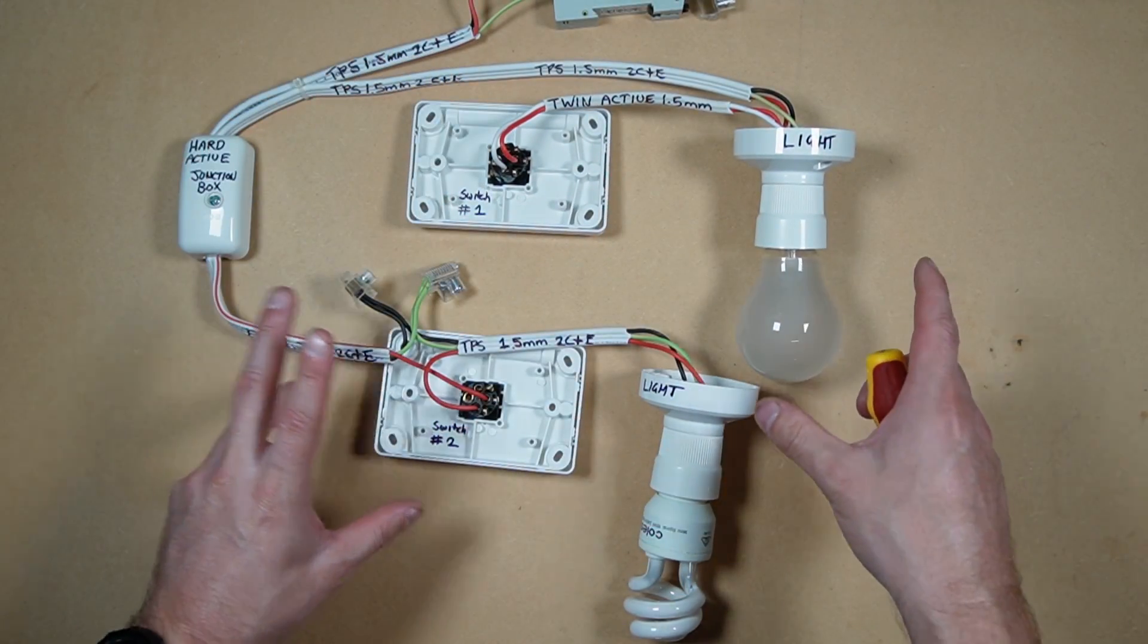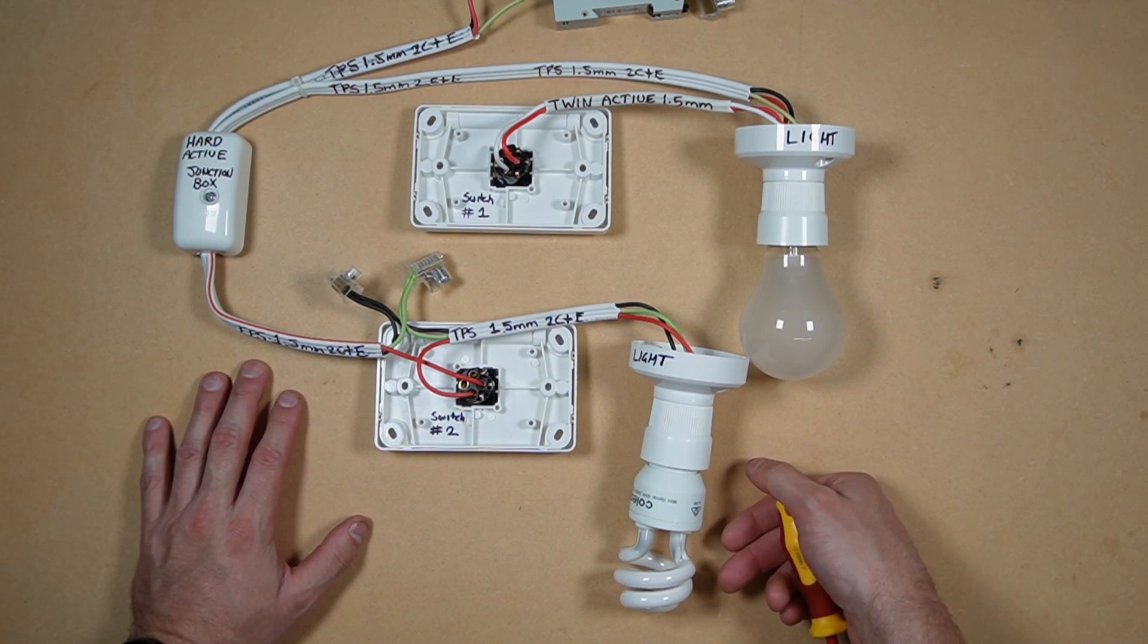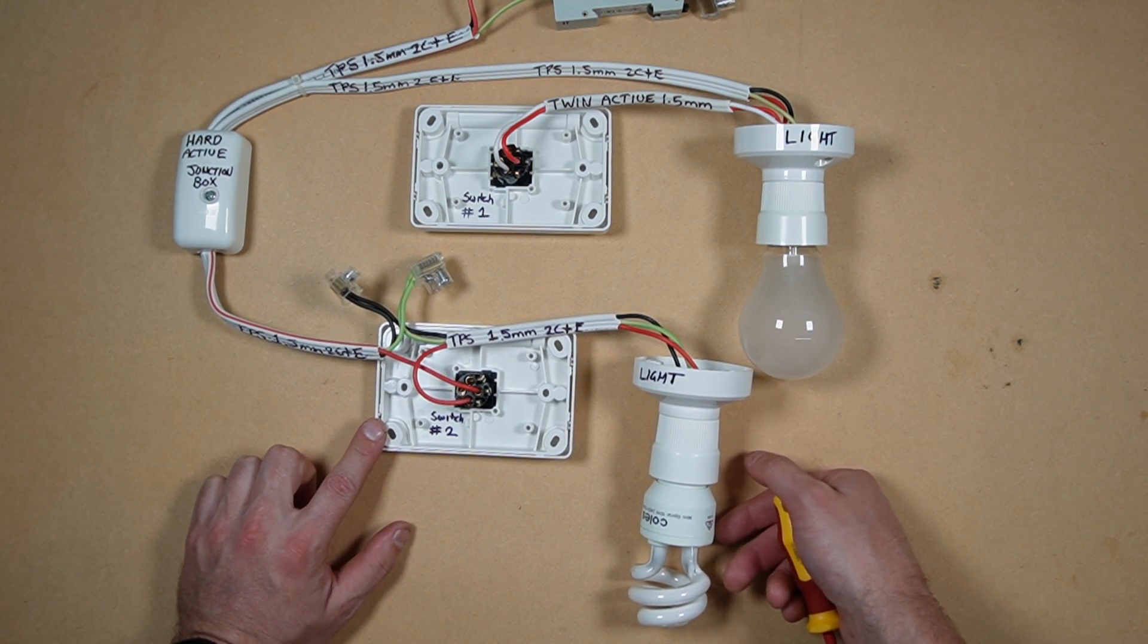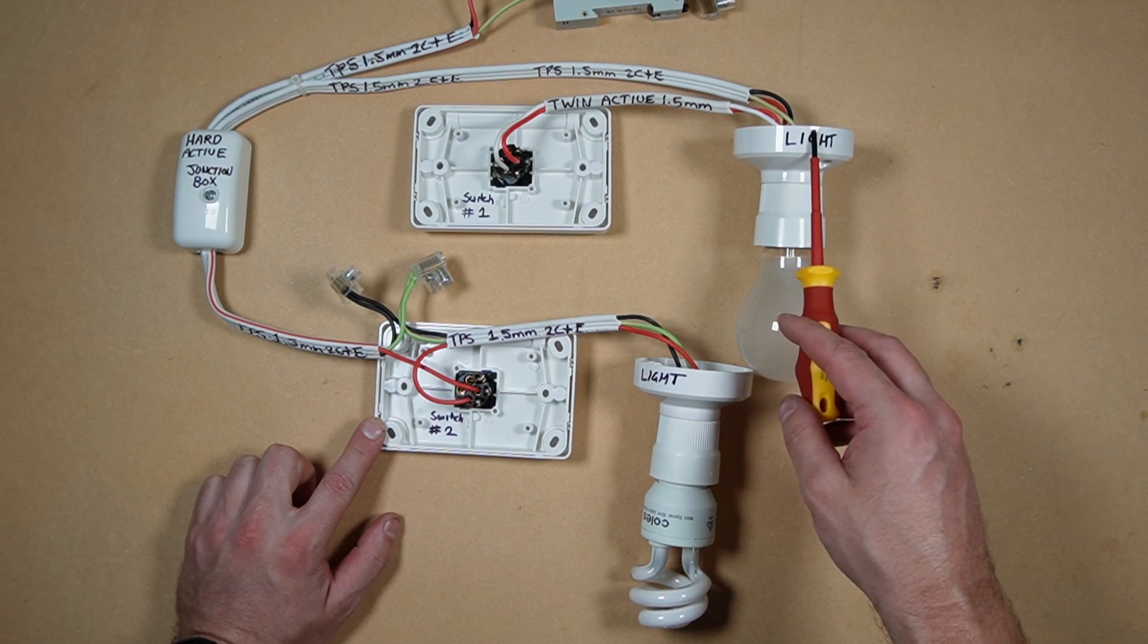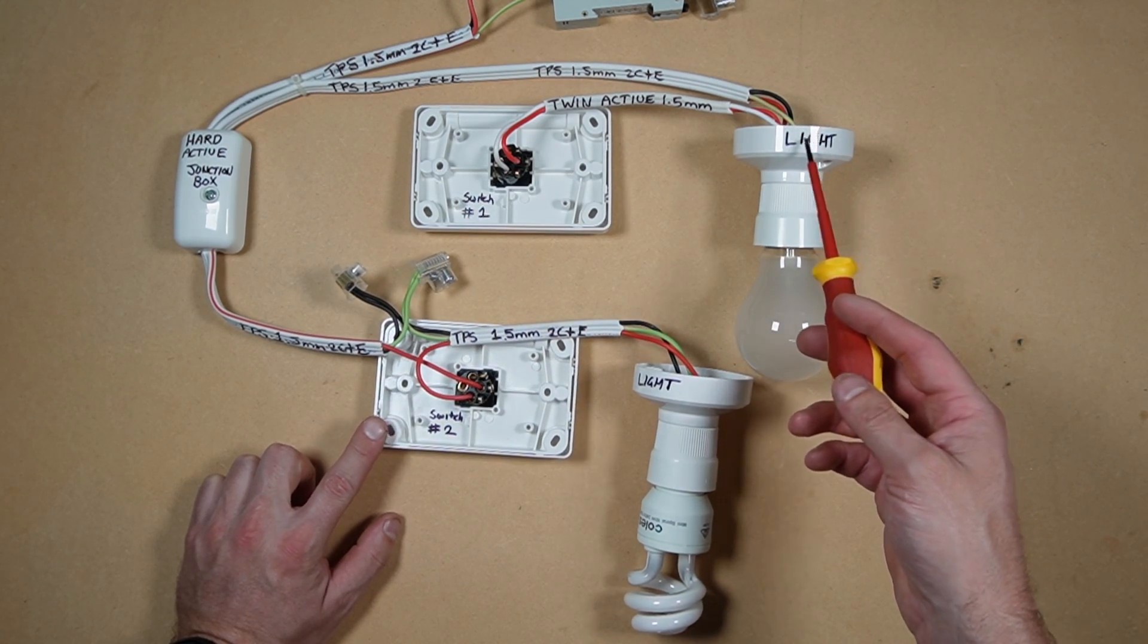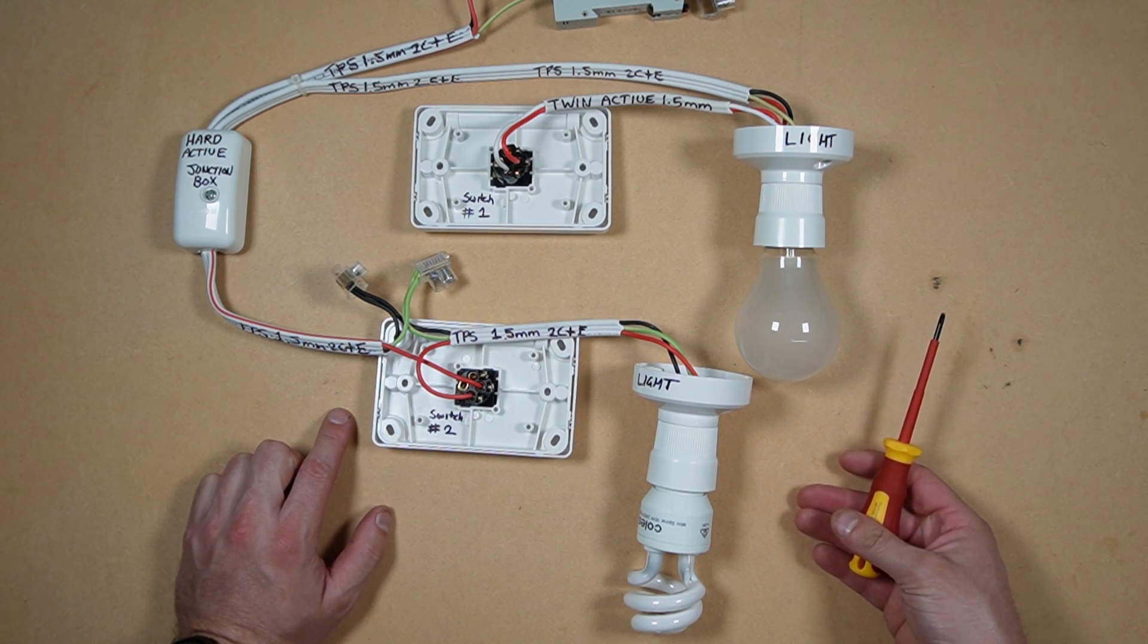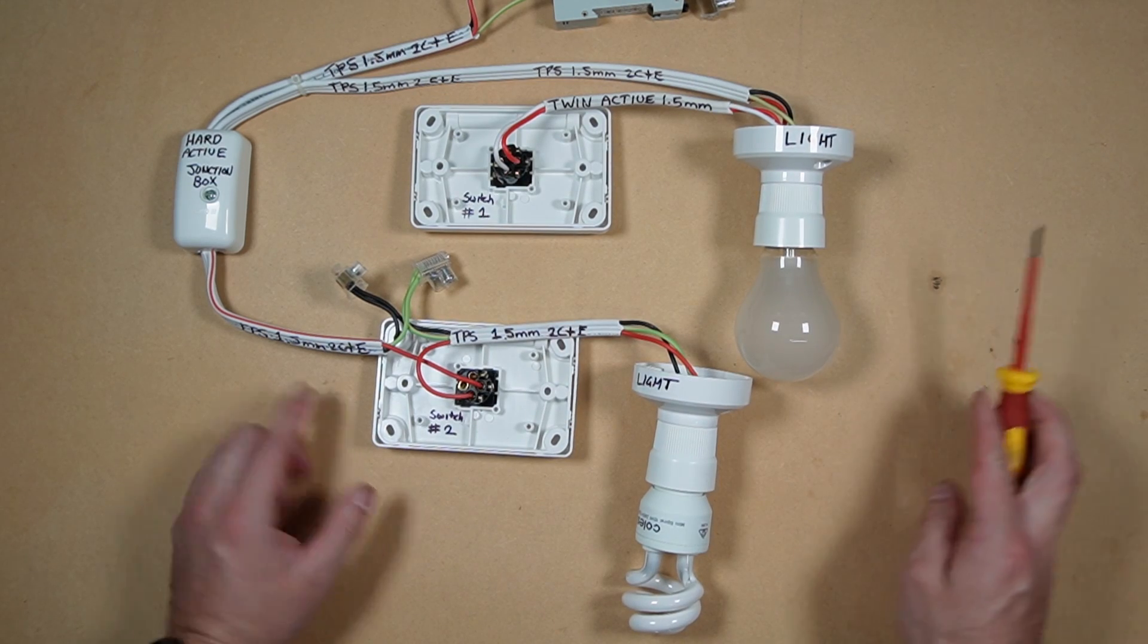The looping at the switch method is very similar. It's used a lot more these days, from probably the 90s onwards. Looping at the light method is probably from the 90s and back. Both methods are still seen today.